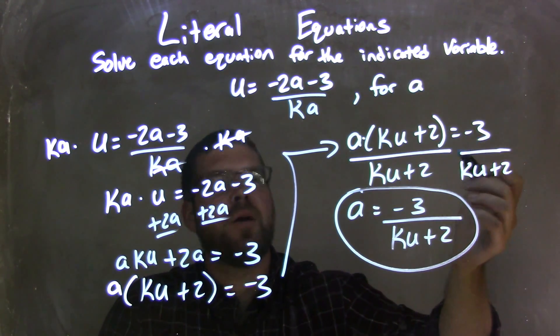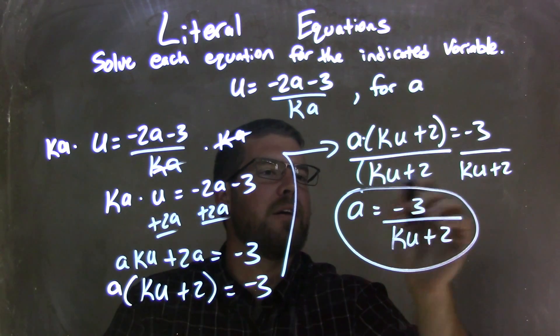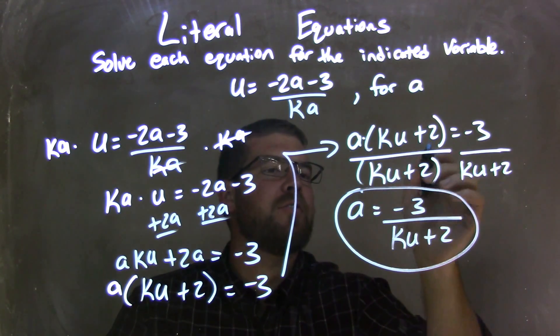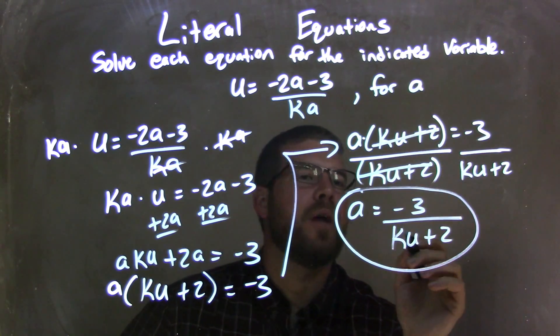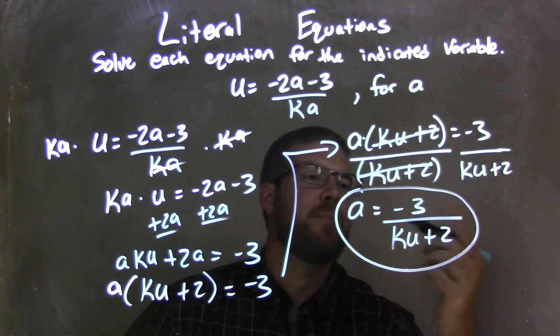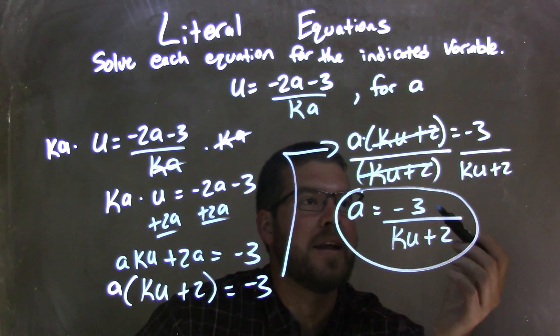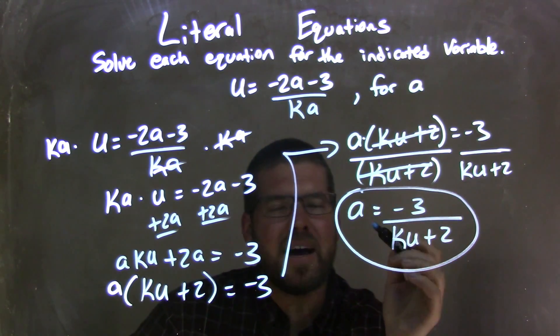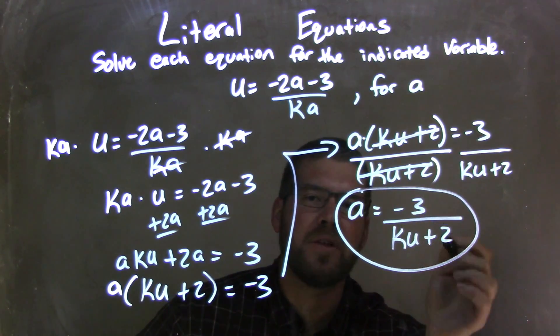I rewrite that over here, but then my next step was to divide by what's in the parenthesis here, that ku plus 2, to both sides. By doing that, I eliminated the ku plus 2 on the left and just brought it to the right and divided that from negative 3. So that gave me my final answer of a equals negative 3 over ku plus 2.